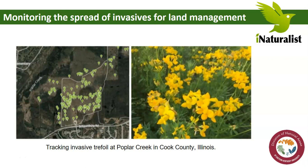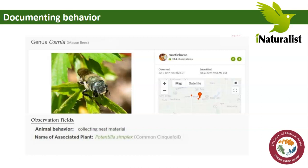Here's an example from the Cook County Forest Preserves in Illinois, where they are tracking and targeting the removal of a particular invasive plant. It's actually pretty, but it's invasive. Another important part of the citizen science aspect of iNaturalist is that it can be used for documenting different behaviors. For example, here you see a mason bee on a plant — documenting the relationship between this bee and this particular species of plant, showing that the bee is actually collecting nest materials from this associated plant. It can help establish these kinds of relationships and document different behaviors.